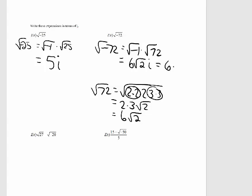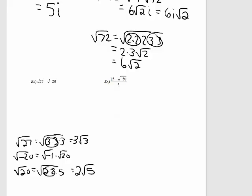I'm going to rewrite the square root of negative 72. I want to pull out all the perfect roots of 72. Doing that, we have 6 times the square root of 2. And we know the square root of negative 1 is i, so I can write it like this. You can also rewrite it as 6i times the square root of 2. I would accept either one of those answers.